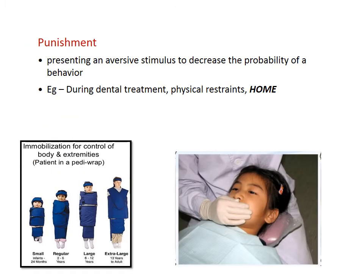Punishment is the presentation of an aversive stimulus to decrease the probability of a behavior. The aversive stimuli used are either physical restraints or the HOME technique. If the child is not allowing treatment to be done, the aversive stimulus — physical restraints or HOME — can be presented.